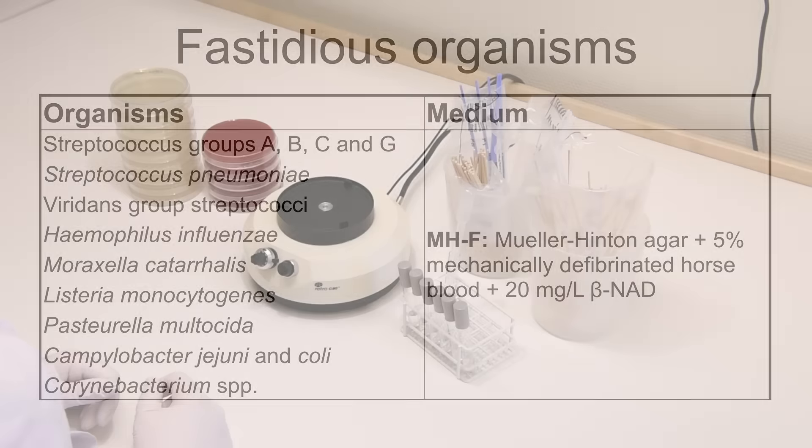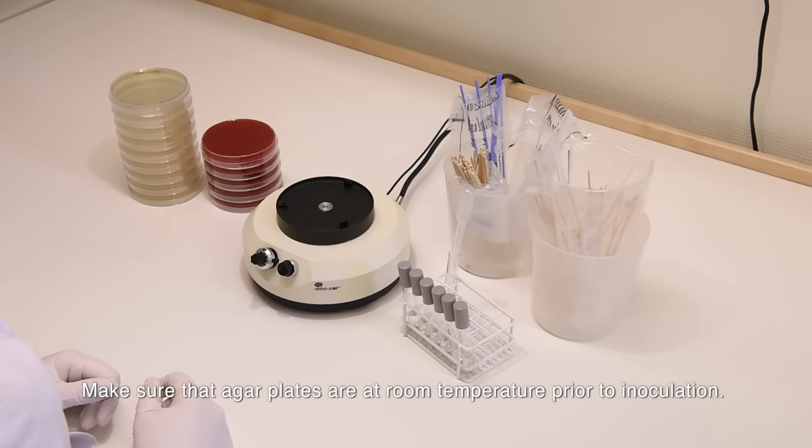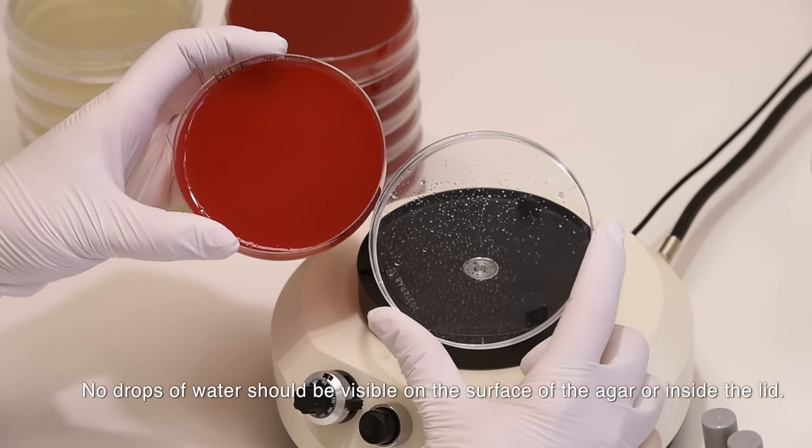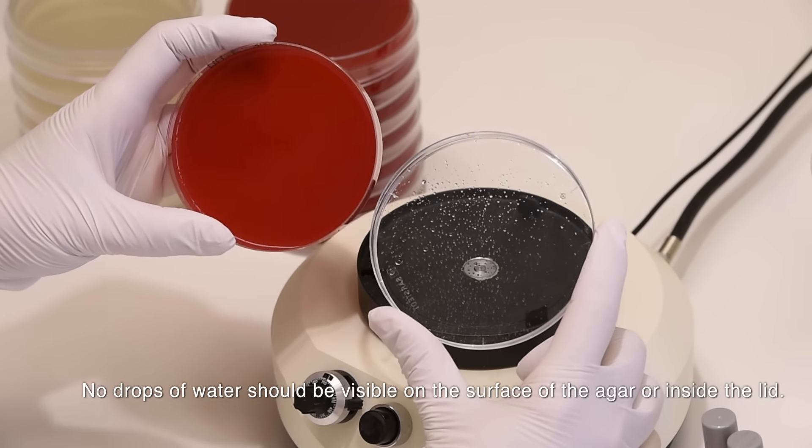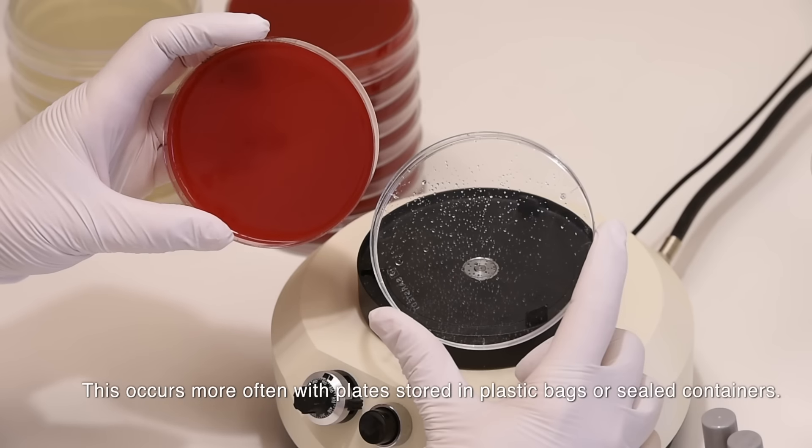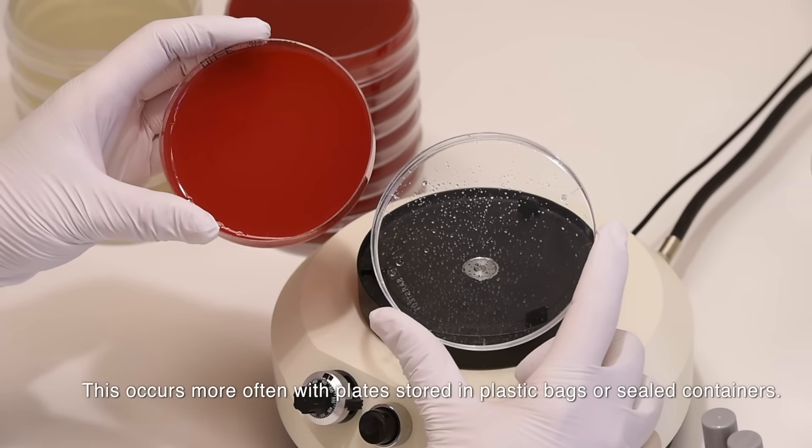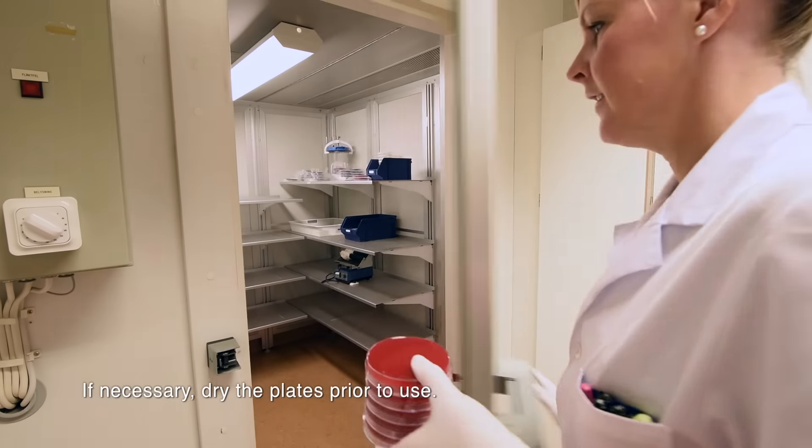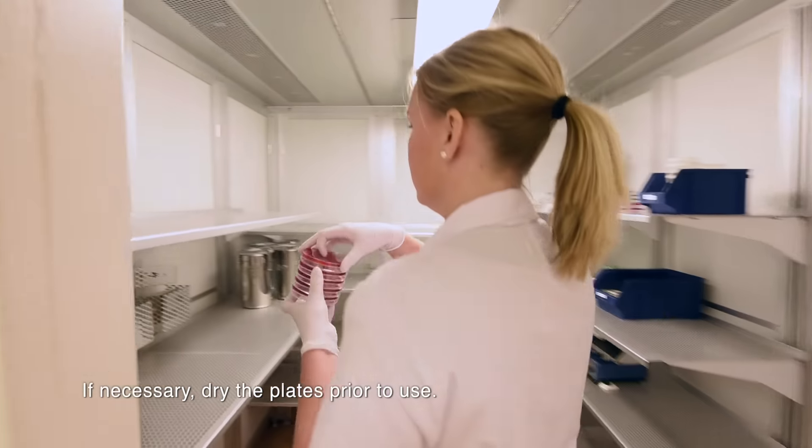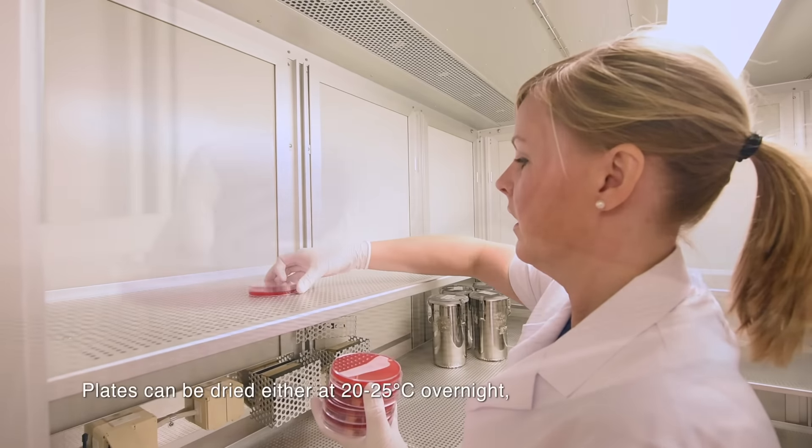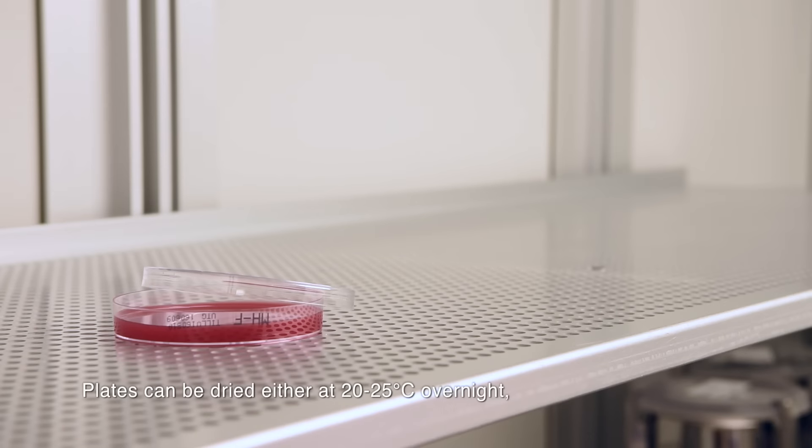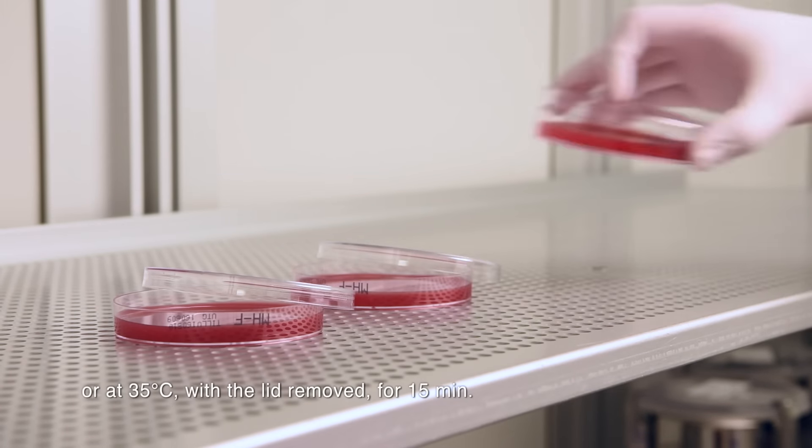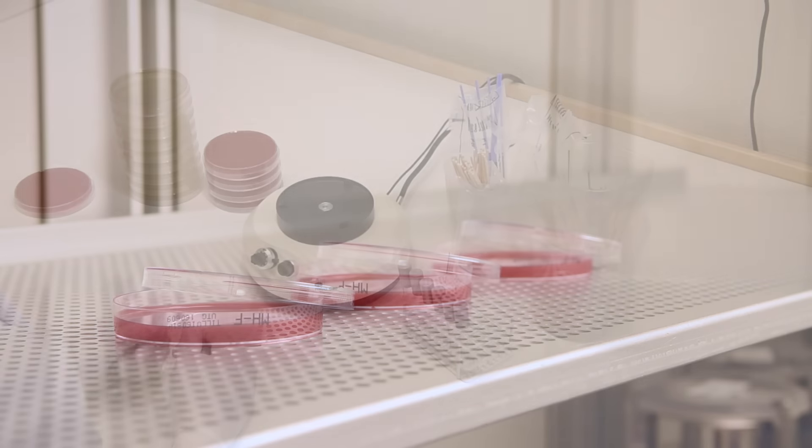Make sure that agar plates are at room temperature prior to inoculation. No drops of water should be visible on the surface of the agar or inside the lid. This occurs more often with plates stored in plastic bags or sealed containers. If necessary, dry the plates prior to use. Plates can be dried either at room temperature (20-25°C) overnight or at 35°C with the lid removed for 15 minutes.